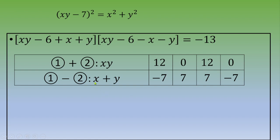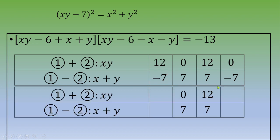Recalling that x and y are non-negative integers, it is not possible for the sum of two non-negative numbers to be negative. So we discard the cases where x plus y equals negative 7, leaving only the valid cases where x plus y equals 7.